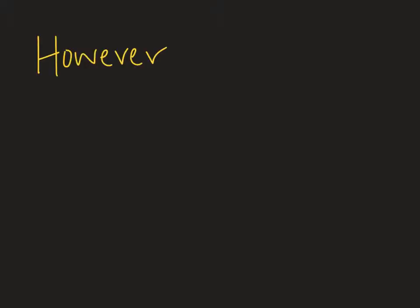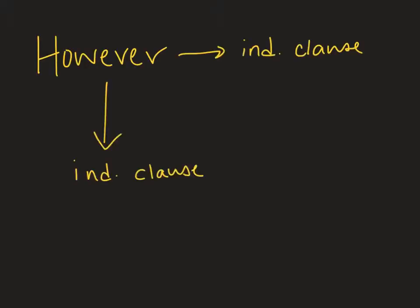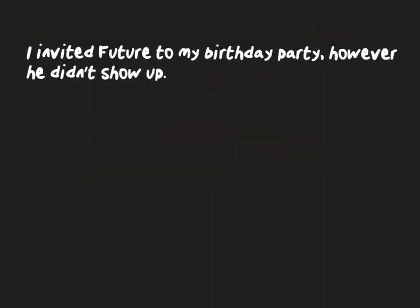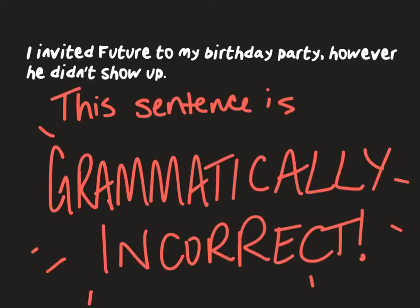But the big mistake I see students making all of the time is using 'however' to connect two independent clauses, or to connect two sentences. For example: 'I invited Future to my birthday party, however he didn't show up' — this would be a way of writing that incorrectly.